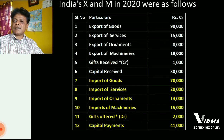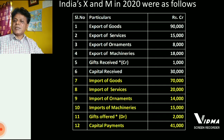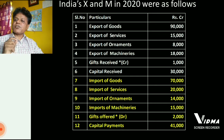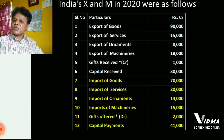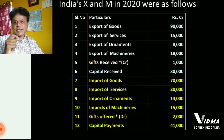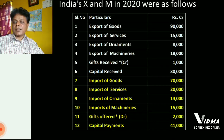Capital received: rupees 30,000 crores. Imports of goods: rupees 70,000 crores. Imports of services: rupees 20,000 crores. Imports of ornaments: rupees 14,000 crores. Imports of machinery: rupees 15,000 crores. Gifts offered by India to other countries: rupees 2,000 crores — and gifts offered by India will be written in the debit column of the current account. The last item is capital payments: rupees 41,000 crores.